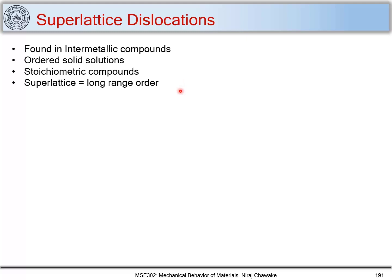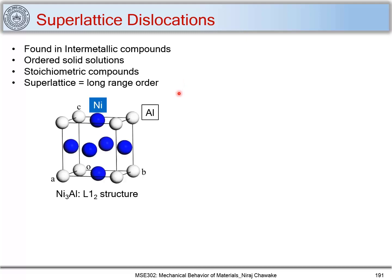Let us look at certain examples of intermetallic compounds. Consider the example of Ni3Al, where aluminum is at the corners and nickel occupies the face centers. Both nickel and aluminum have an FCC structure, but if you look at the Ni3Al structure, it is not an FCC structure — it is called the L12 structure and it is different from FCC.